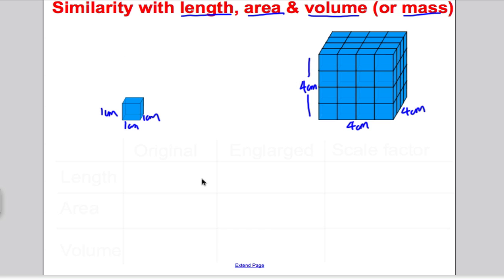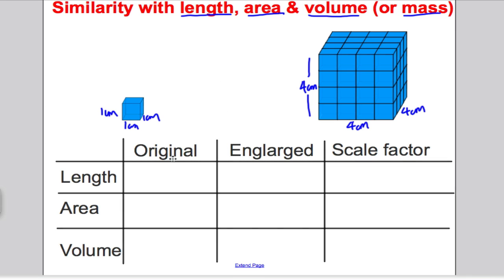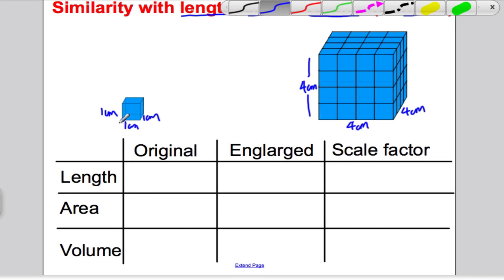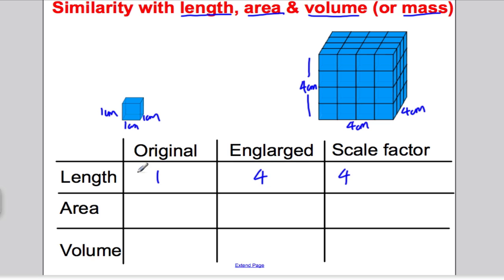Let's fill out a table that works out the lengths of each shape. The length of the original shape was 1, and of the enlarged is 4. So the scale factor of enlargement is 4. What's the area of one of the sides? This is 1 times 1, so it's 1 centimetre squared. And this one is 4 times 4, which is 16 centimetres squared. You'll note the area scale factor is 16 divided by 1, which is 16. The volume is 1 times 1 times 1, so it's 1 centimetre cubed. The enlarged volume is 4 times 4 times 4, which is 64 centimetres cubed. So the scale factor there is 64.